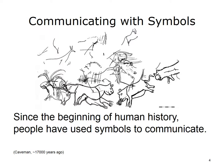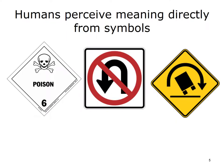Before written language, early humans used symbols to communicate. While we aren't sure if a picture is really worth a thousand words, we do know that with some graphic representations, humans perceive more information and perceive the information faster than through verbal and written communication channels. Humans directly perceive meaning through symbols. For example, the skull and crossbones is a universal symbol for danger.